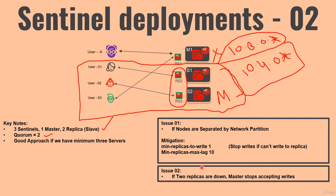However, this mitigation has a drawback: whenever both replicas (S1 and S2) are down, the master will not accept any write operations, because min-replicas-to-write is set to 1. When setting up your production environment, you should assess these scenarios. You can try to ensure all Redis nodes are part of the same network partition. Different kinds of issues can produce different behaviors, so always do thorough testing before deploying your application in a production environment.